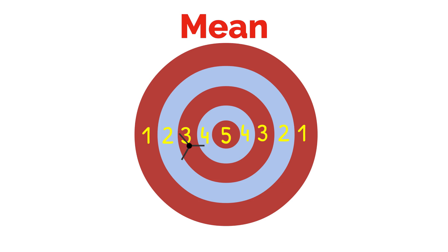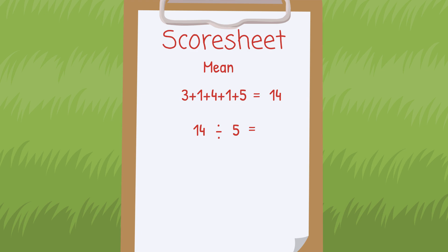For the mean, or average, you will add up all the points for the round, then divide the total by the number of arrows fired. So the sum of all the points was 14, divide that by 5 for the amount of arrows fired, and that gives us a mean of 2.8.